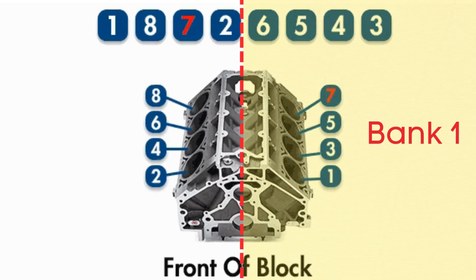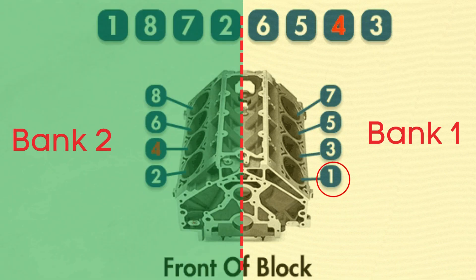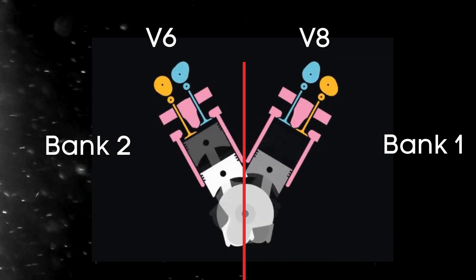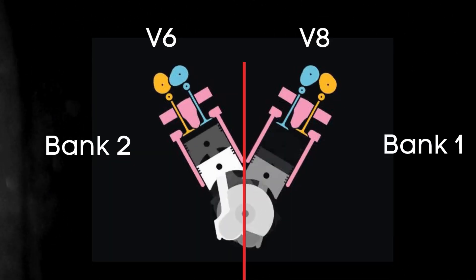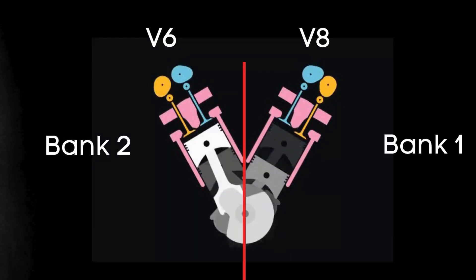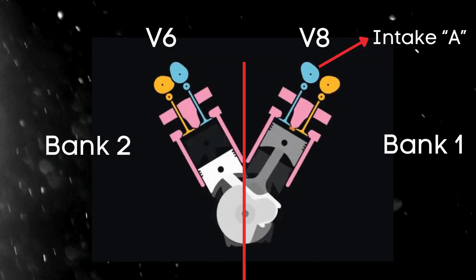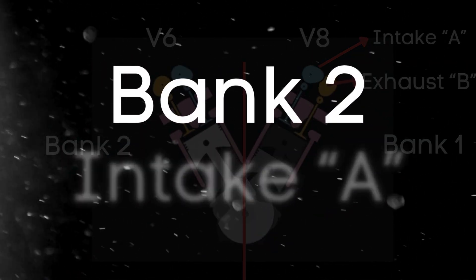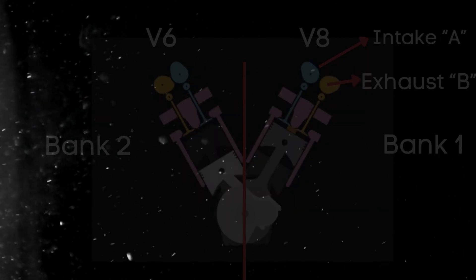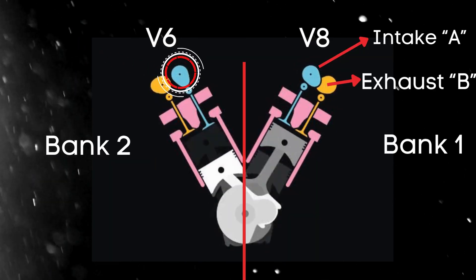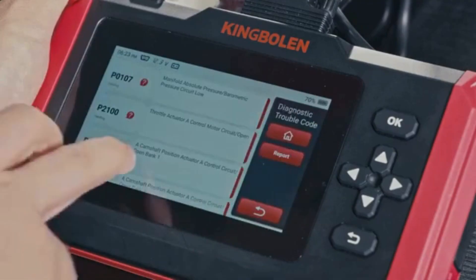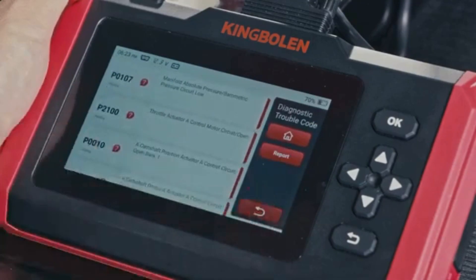Bank 1 typically refers to the side of the engine where cylinder 1 is located, and bank 2 is on the opposite side. For engines with dual overhead camshafts, DOHC, each bank has two camshafts — one for intake valves and one for exhaust valves. So when we talk about the bank 2 intake camshaft, we're referring to the camshaft that controls the intake valves on the opposite side of the engine from where cylinder 1 is located.